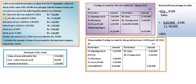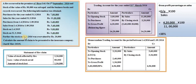Purchase for the year ended 31st March 2016: 7 lakh. Sales for the year ended 31st March 2016: 11 lakh. Purchase from 1st April 2016 to 1st September 2016: 2 lakh 40,000. Sales from 1st April 2016 to 1st September 2016: 3 lakh 60,000. Stock on 31st March 2016: 3 lakh 40,000.